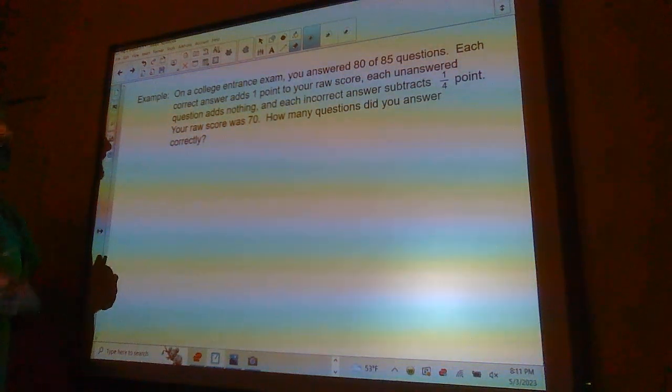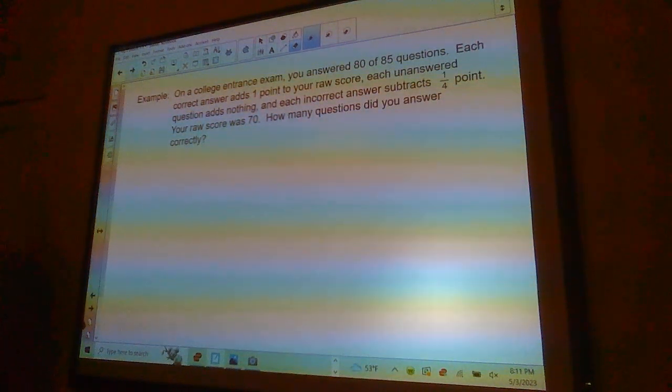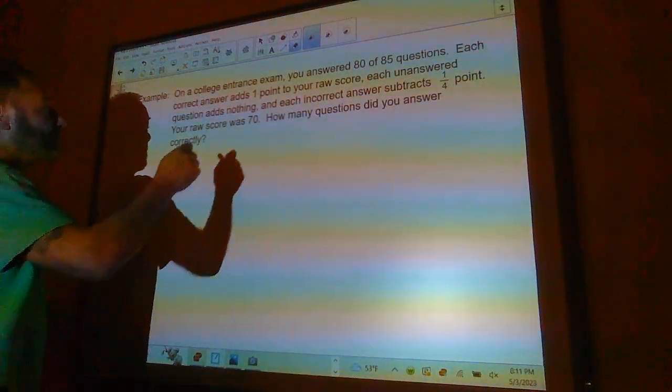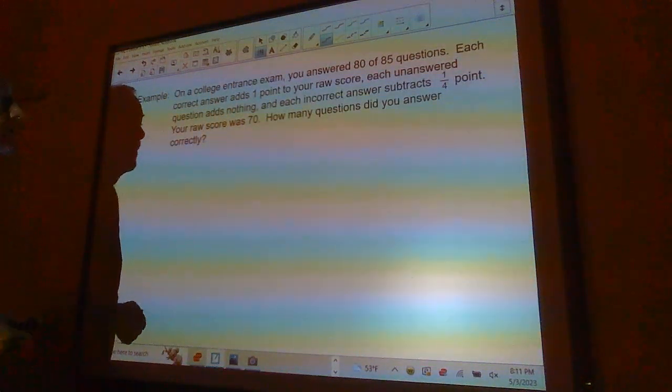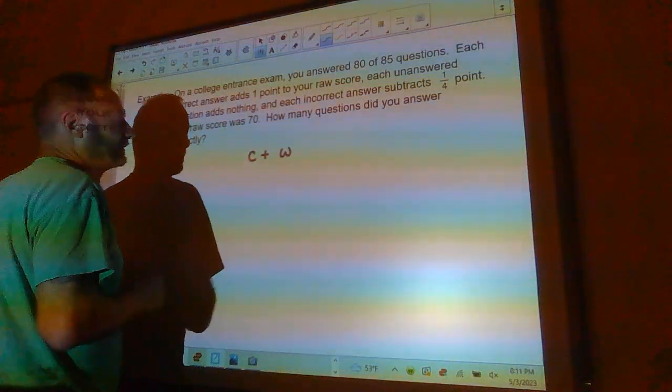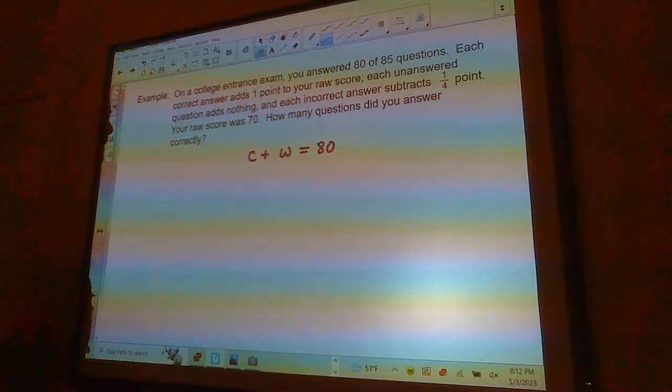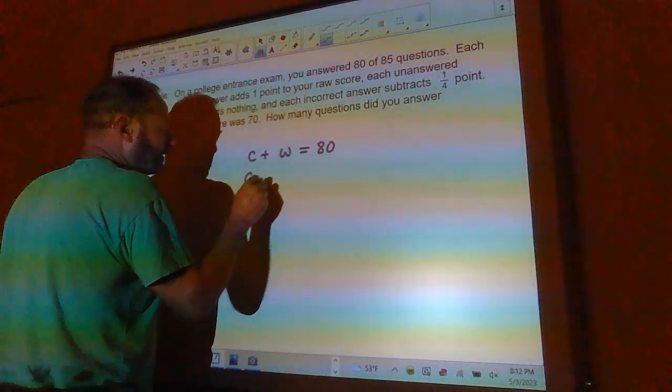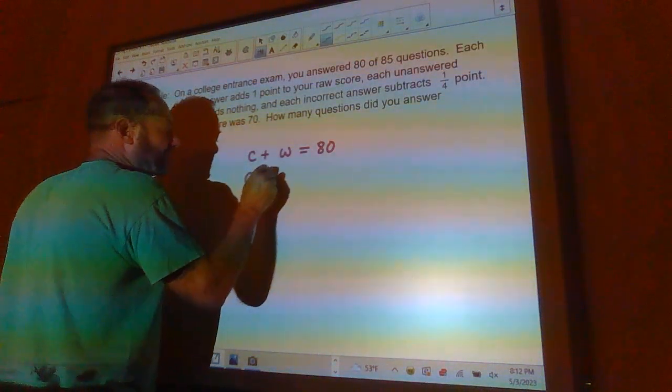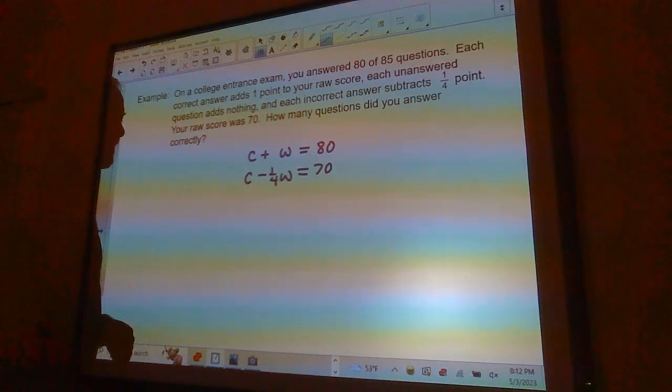So on a college entrance exam, you answered 80 of 85 questions. Each correct answer adds one point to your raw score. Each unanswered question adds nothing. And each incorrect answer subtracts a quarter of a point. You get a raw score of 70. How many questions did you answer correctly? The hardest part of this is setting up your system of equations. Here's what we know. We know that you answered 80 questions. So the correct questions plus the wrong questions is going to equal 80. And then we know that the correct questions give you one point. And we subtract a quarter for each one you get wrong, and we get a total score of 70. There's my system.